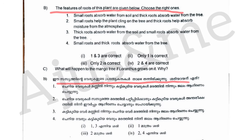Choose the right ones. The epiphyte has been created as such. Small roots absorb water from soil and thick roots absorb water from the tree. The small roots help the plant cling on the tree and thick roots help absorb moisture from the atmosphere.